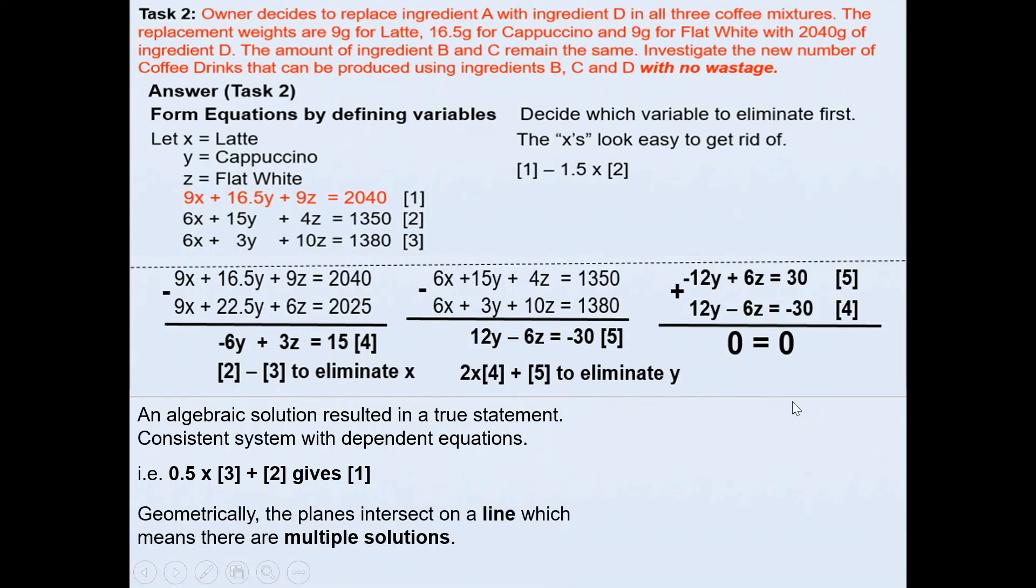Geometrically, the planes will intersect on a line, which means this will have multiple solutions. If you manage to interpret this and mention that it will have multiple solutions, you will qualify for merit. This is an example of the arrangement of these three planes. You can see there is a common intersection here. The planes intersect on a line, giving multiple solutions.